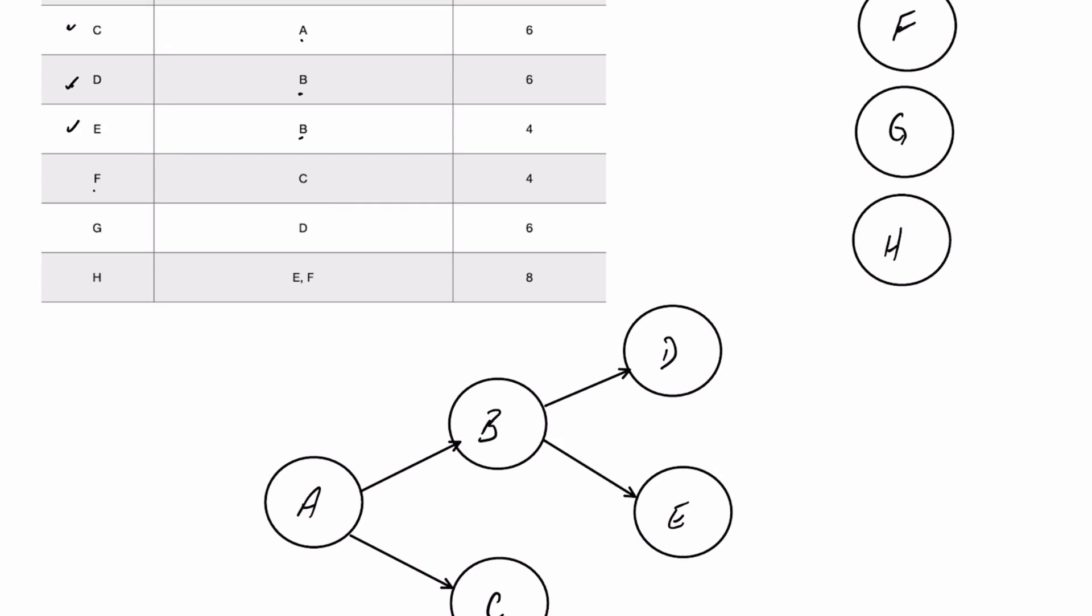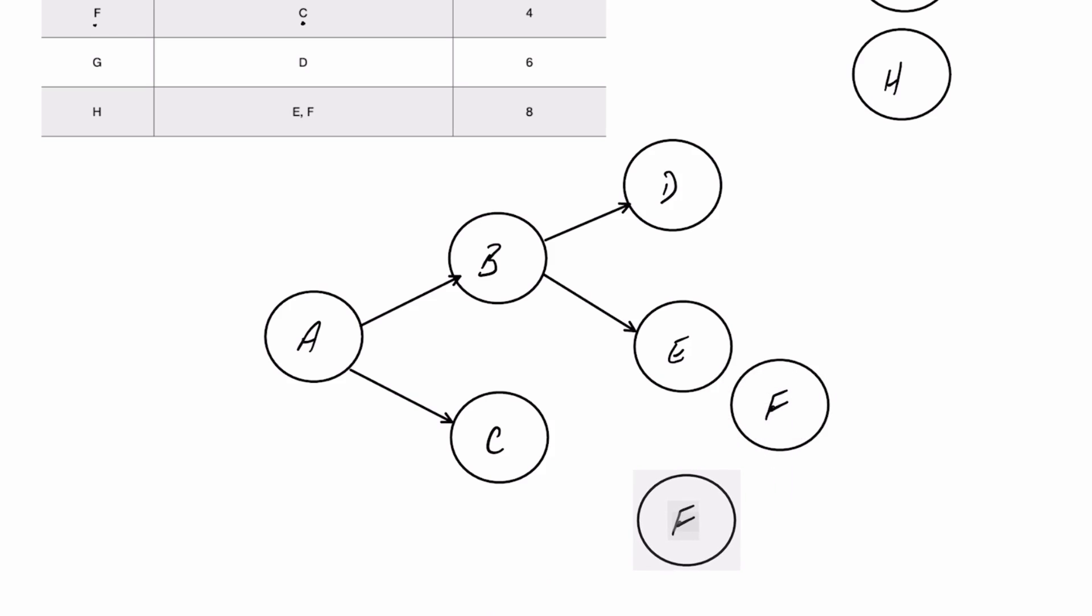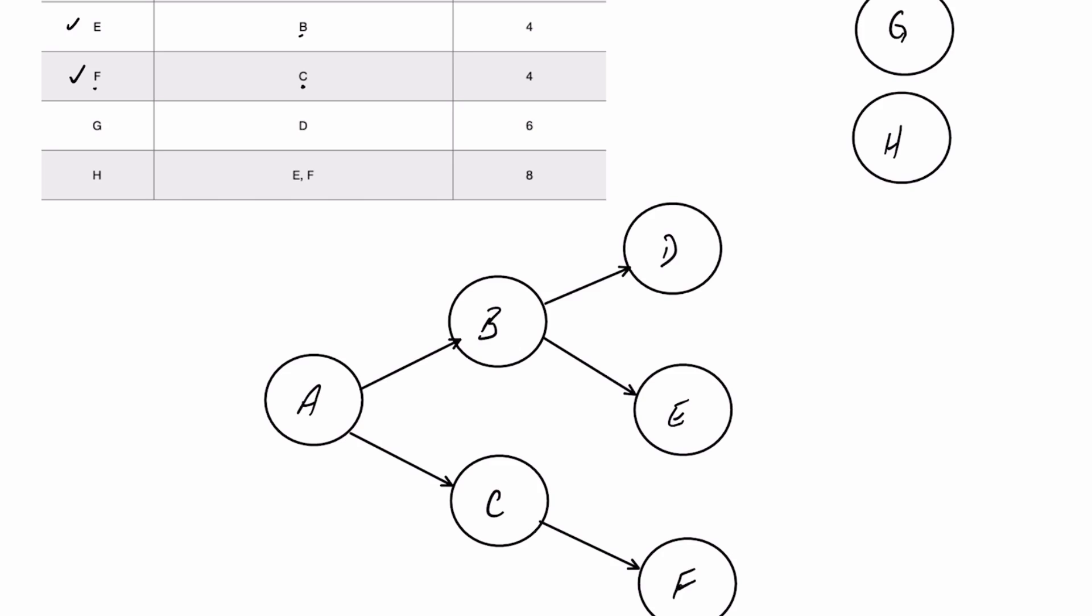So now that we've completed those, Activity F has Activity C as its immediate predecessor. So F is going to come down a little bit lower about here in our diagram, something like that. And then we see Activity G comes off of Activity D, we'll take G, put it about there.